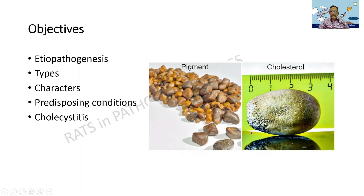On the screen, I am finding two different sets of pictures. One, I am finding multiple stones and the stones have got multiple flat facets, which we call as faceted. Also, the color is somewhat varying from brownish to yellowish brown. And the second one is more solitary, a little rough. It has got a lemon yellow tinge — a cholesterol stone.